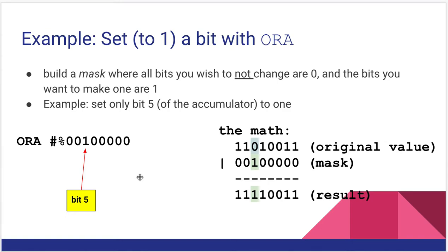An example of what we can do with a bitwise OR: in situations where we want to ensure a bit is one, we can use OR with accumulator. Here I want to ensure that bit 5 gets set to one in my accumulator, so I have all zeros in my bit mask except for bit 5 which is set to one. I do that with ORA, and you can see that whatever value was in the accumulator, after the OR that bit is guaranteed to be one. Again, similar to AND, this works in scenarios like TCP/IP where we want to ensure certain flags in headers are set appropriately.